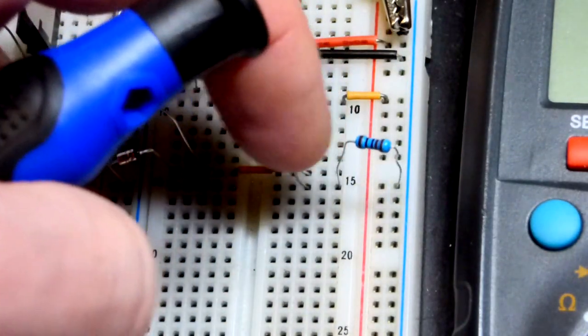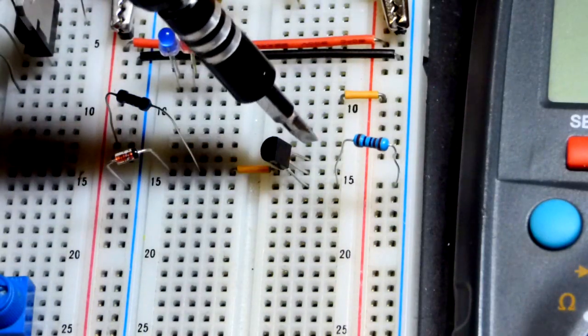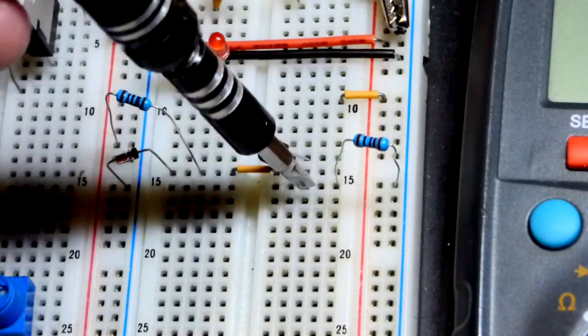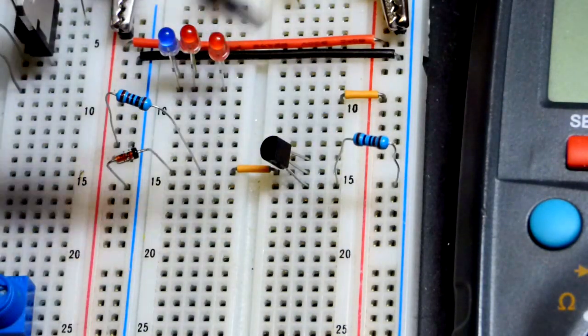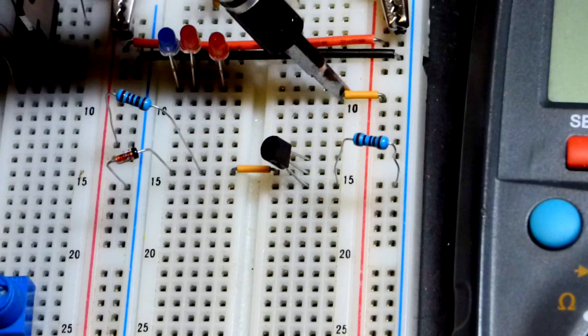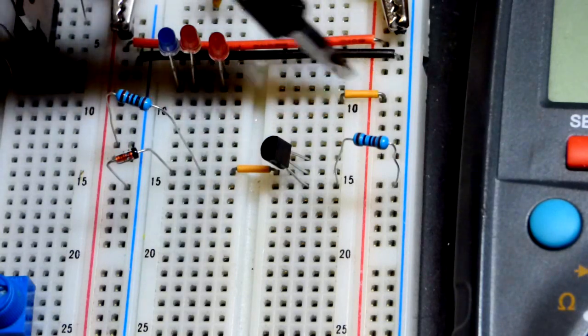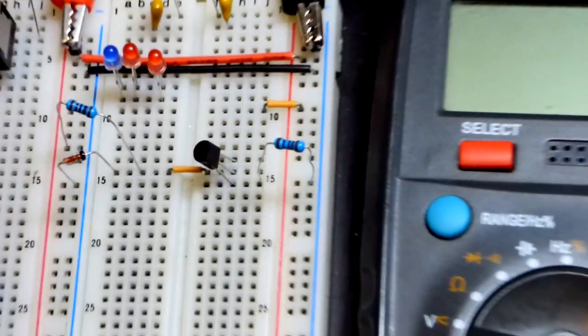And the flat side is facing to the right, and so we have the collector, the base, and the emitter. The emitter has that 1 kilohm resistor there. We have an opening between the collector and the positive side of the supply so that we can measure current.